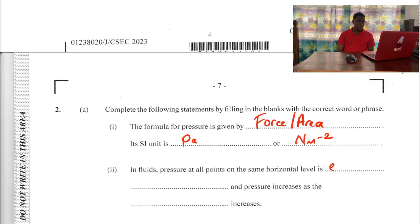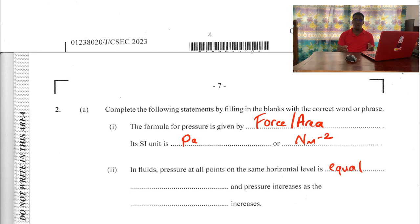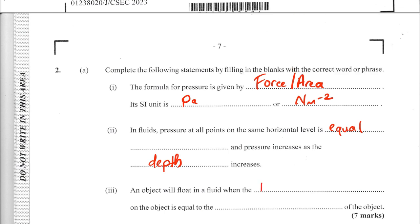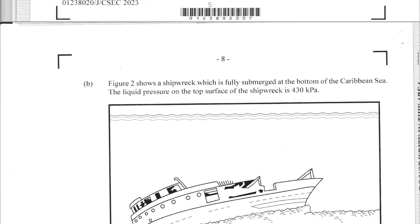2A2: in fluids, pressure at all points on the same horizontal level is equal, and pressure increases as the depth increases. 2A3: an object will float in a fluid when the buoyant force acting upward on the object is equal to the weight of the object.